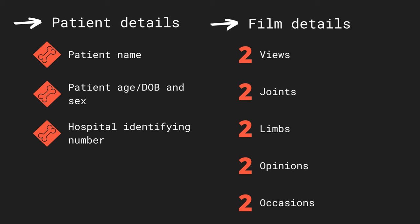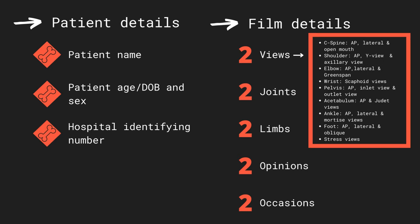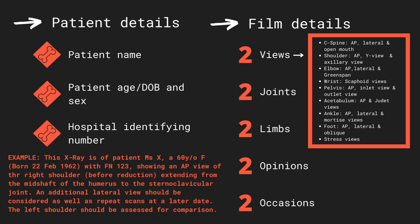Finally, this approach calls for x-rays on two occasions, particularly in the case of fractures — before and after reduction or the application of therapeutic interventions. While AP and lateral images are by far the most widely employed, specific views may need to be requested depending on the site of the suspected injury. In summary, the adequacy of an x-ray can be deduced by reporting the details of the patient and the details of the film. An example of how to present these findings has been included.